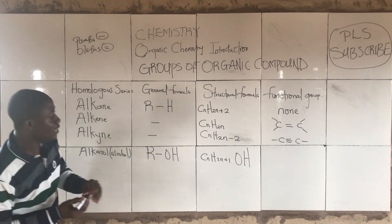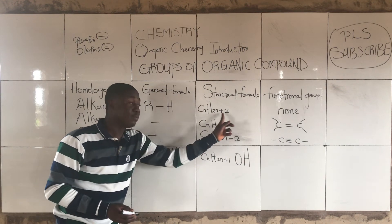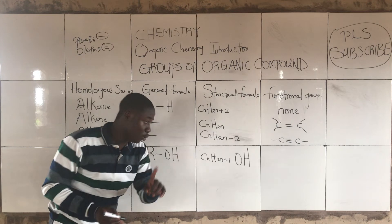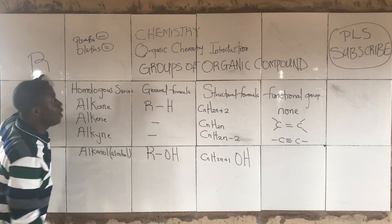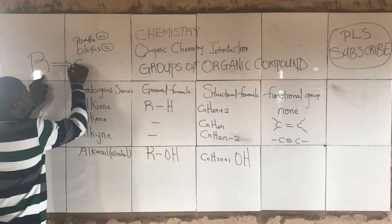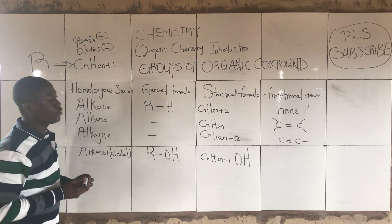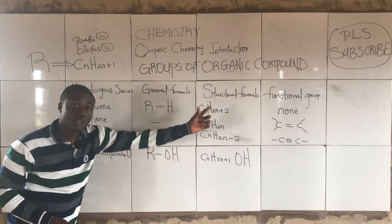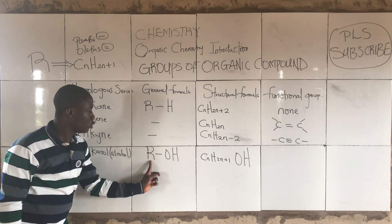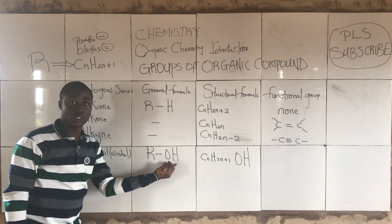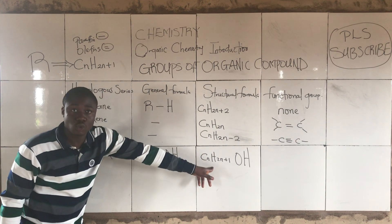For alkanols, the structural formula is CₙH₂ₙ₊₁OH — note it is CₙH₂ₙ₊₁, not CₙH₂ₙ₊₂. This is because the alkyl group is CₙH₂ₙ₊₁. So the structural formula combines CₙH₂ₙ₊₁ with the functional group OH.